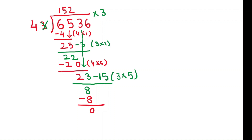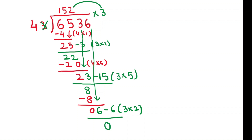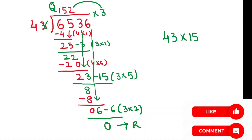Now bring down the next number, which is 6. When bringing down, use the last digit of the divisor with the last digit of the quotient — that is 2. 2 times 3 is 6, and 3 times 2 is 6. 6 minus 6 is 0. This is the remainder and 152 is the quotient. That means 43 times 152 is 6536.